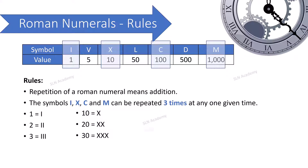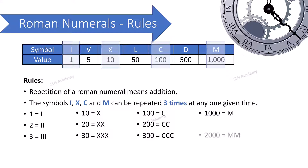Continuing Rule 3 — Repetition rule for C: 100 = C, 200 = CC, 300 = CCC — C is repeated a maximum of three times. Repetition rule for M: 1000 = M, 2000 = MM, 3000 = MMM — M is repeated a maximum of three times.